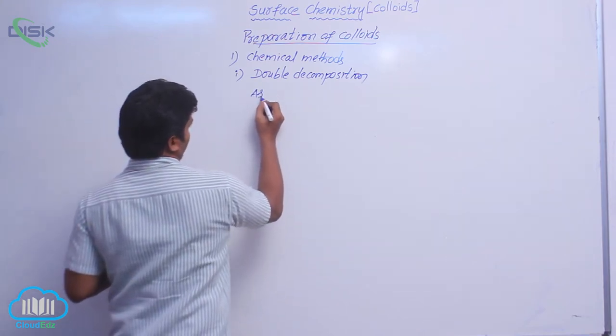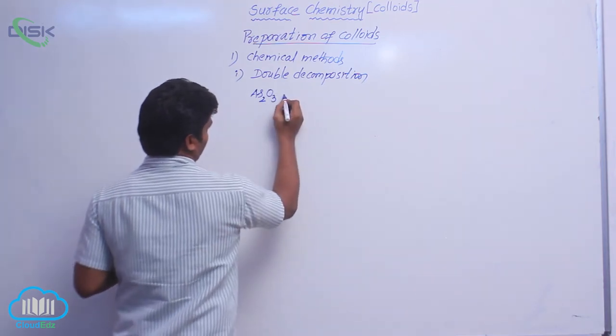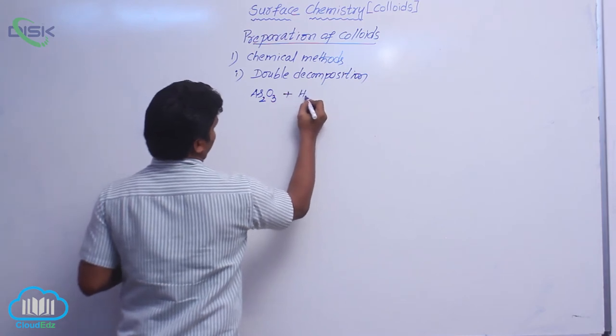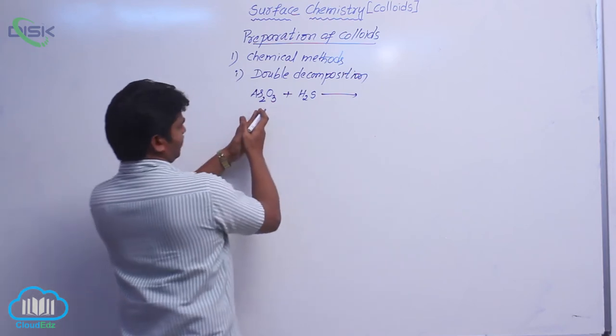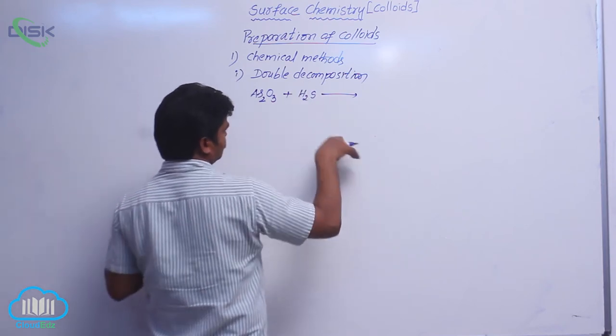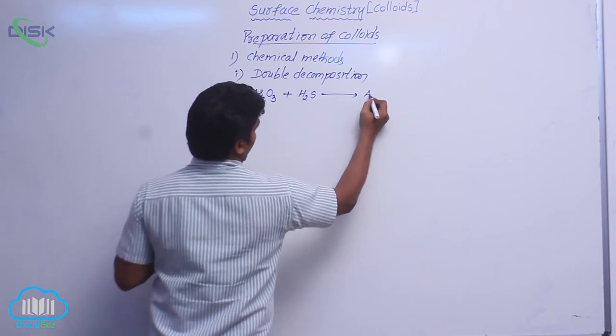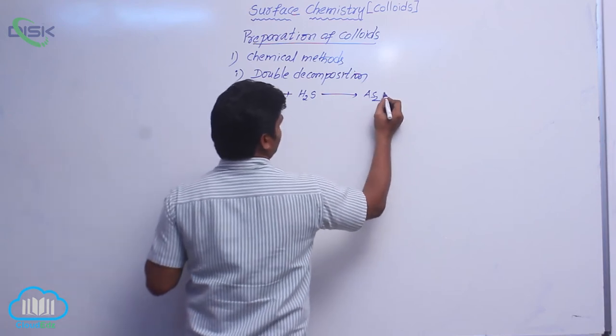For that, let us take arsenic oxide, arsenic trioxide plus H2S. Here arsenic oxide is decomposed and H2S is also decomposed. It is called double decomposition. Here the formed colloidal solution is As2S3 sol.